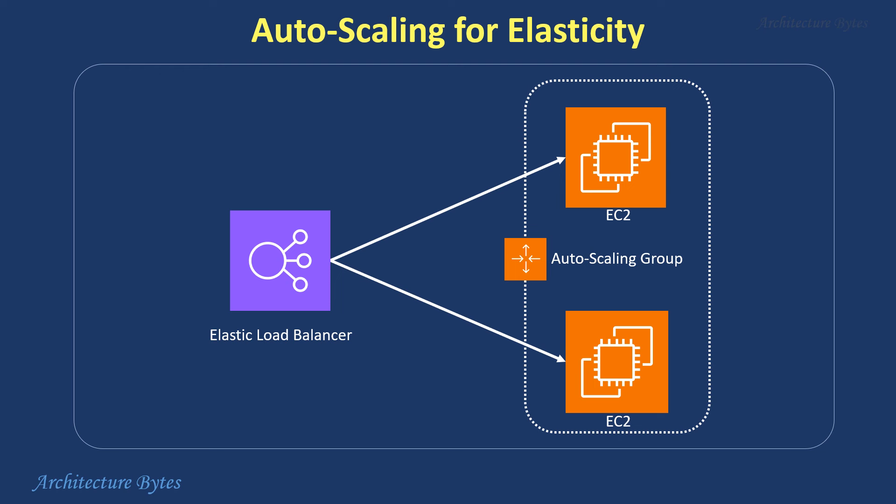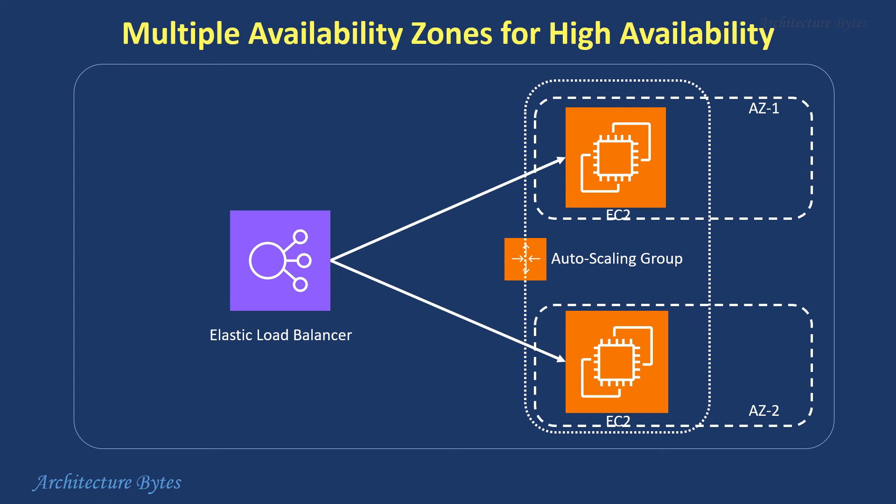This ensures that the application can handle varying load efficiently. Use multiple availability zones with the autoscaling group spread across them to ensure redundancy and high availability.